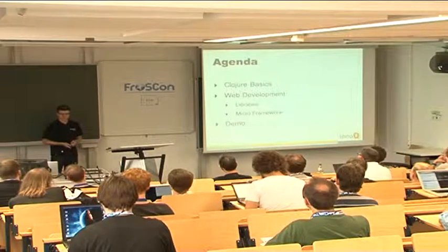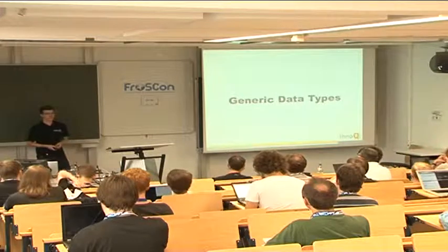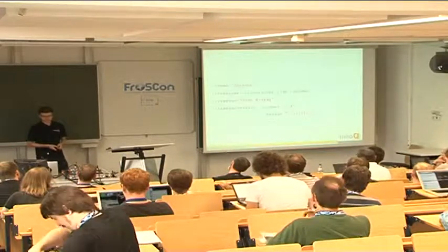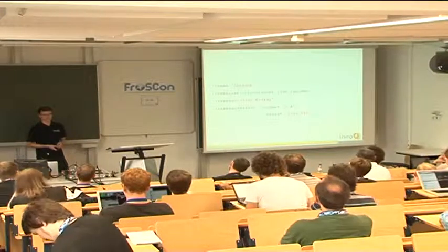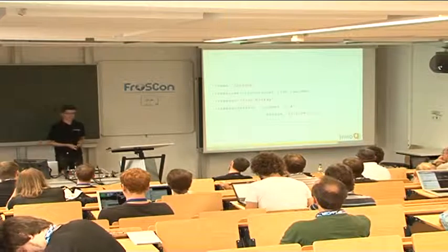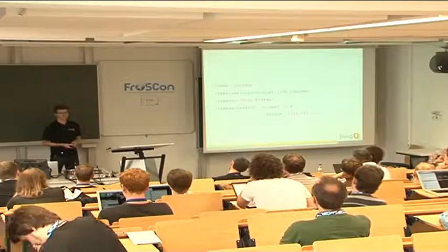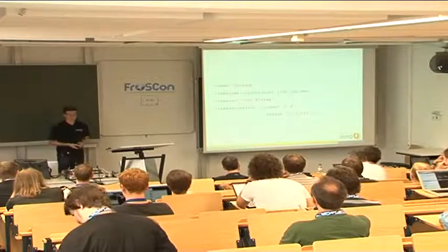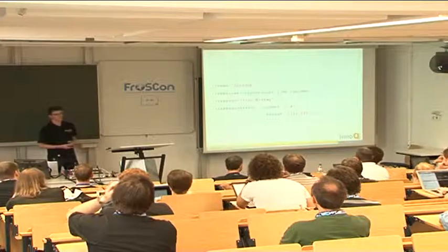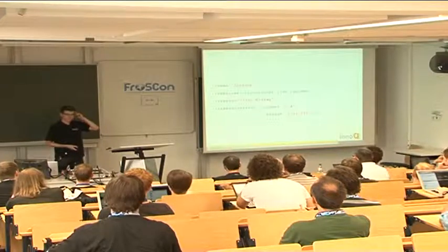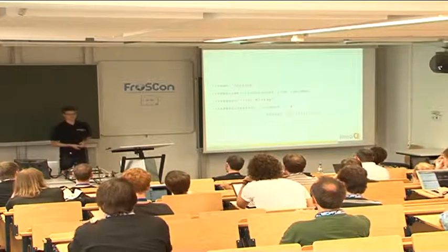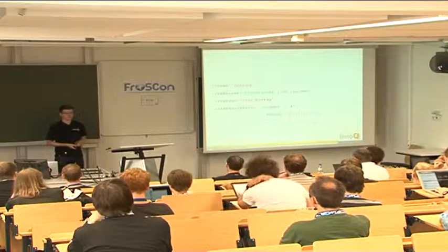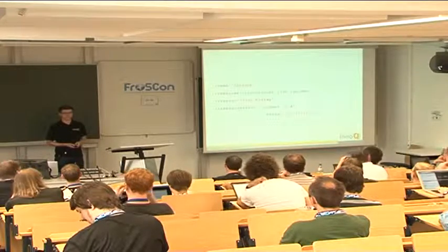Clojure is actually quite a simple language, and there are only two things that are really important. The first is generic data types. This is an example of a Clojure map literal — it's a bit similar to JSON, but whereas in JSON keys and values are separated by colons, in Clojure they just alternate. Those things that start with a colon are keywords. Keywords in Clojure are a bit similar to symbols in Ruby, and they are a pretty good fit for keys in hash maps. They are always interned, so they can very cheaply be compared for equality.